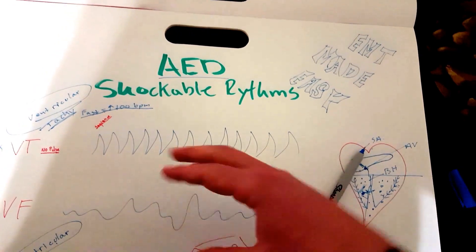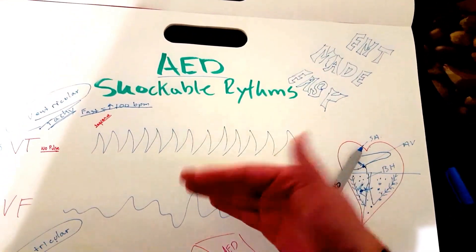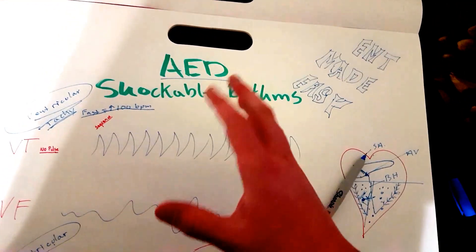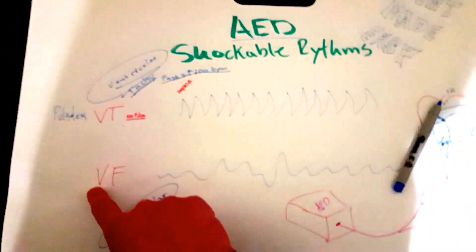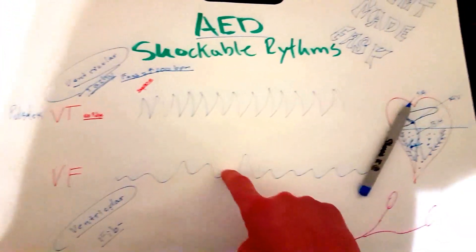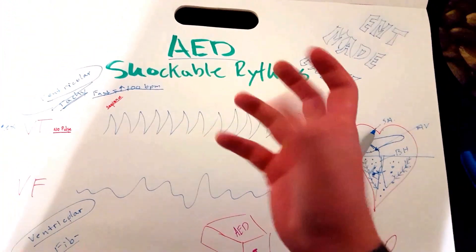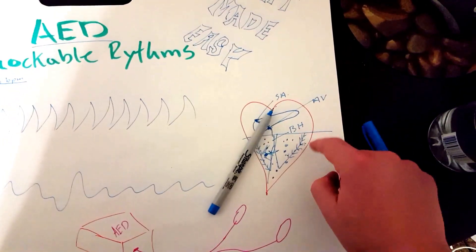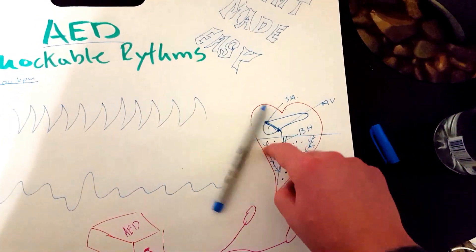Over here, we still have some kind of pump. It may not be a strong pump. It may be too fast, but it's still pumping. With ventricular fibrillation, or VFib, it's just quivering because electricity is just sparking off from multiple locations, and it's not efficient.